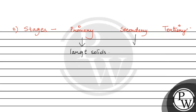Secondary treatment में क्या होता है — इसमें हम rely करते हैं heavy microbial activity के उपर, ताकि degrade कर सके organic matter को। यह stage crucial होता है ताकि यह reduce कर सके biochemical oxygen demand, that is BOD, of the sewage.